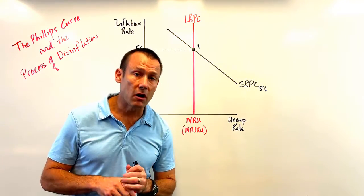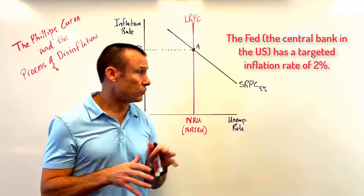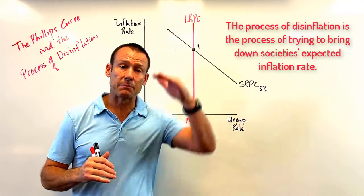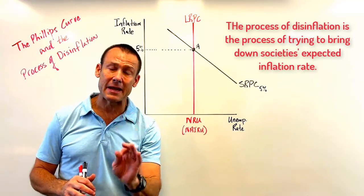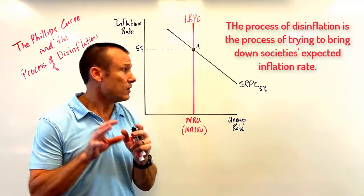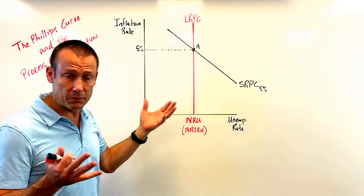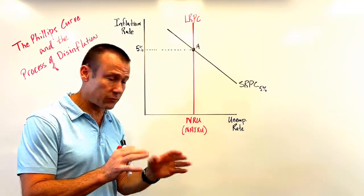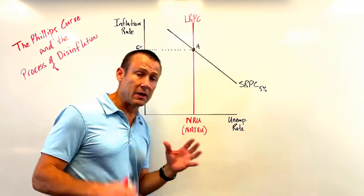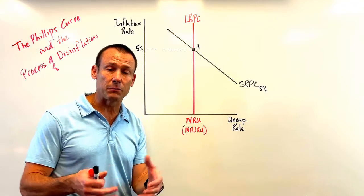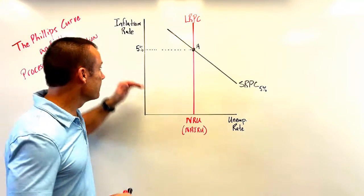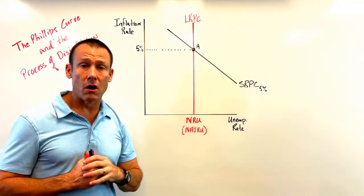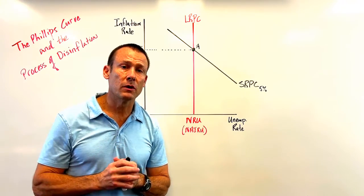In the United States, the targeted inflation rate is 2%. So the Fed would go through the process of disinflation — the process of bringing a positive inflation rate down, which is a painful process. We're at Point A: things are good from an unemployment standpoint, we're at the natural rate of unemployment — full employment. But the expected inflation rate is higher than the Fed is comfortable with, so they want to bring it down to their 2% target.